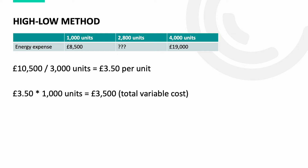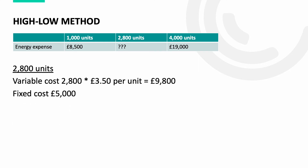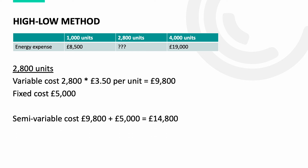We can then use this to calculate the fixed costs, as the remaining amount out of the total semi-variable cost of £8,500 must relate to fixed costs. Therefore it is £8,500 less £3,500, giving a fixed cost of £5,000. We can now calculate the semi-variable cost for 2,800 units: 2,800 multiplied by £3.50 gives a variable element of £9,800, then adding fixed costs of £5,000 gives a total semi-variable cost of £14,800.